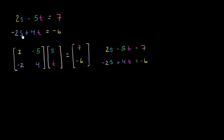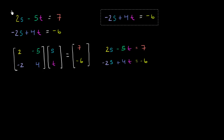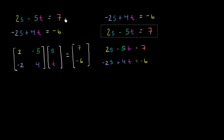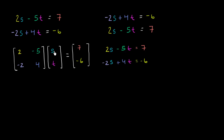There are other ways I could have done it. For example, I could swap the two equations — writing the second one first and the first one second — which is obviously the same system. If I wanted to construct a matrix equation from that swapped system, I would just swap the rows of the coefficient matrix. The first row would be negative 2, 4, and the second row would be 2, negative 5, and the right-hand side column vector would be negative 6, 7.